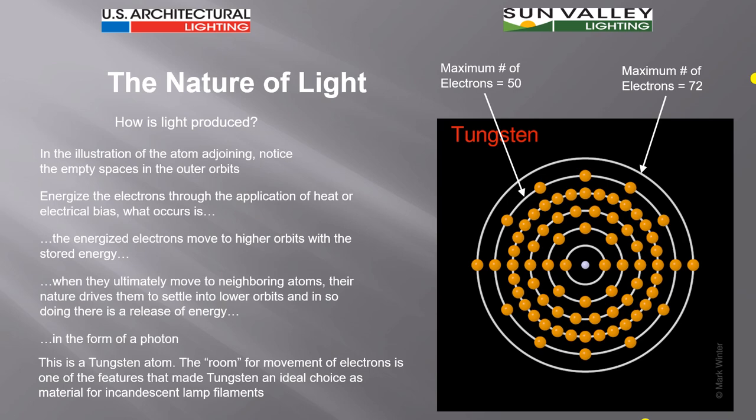That's the reason it was used as the choice of material for incandescent lamp filaments. Now the process of incandescence in producing light is the process of heating up the atomic structure. If we take electricity and use that to generate heat, we've got a step there in the transference of processes that generates losses.